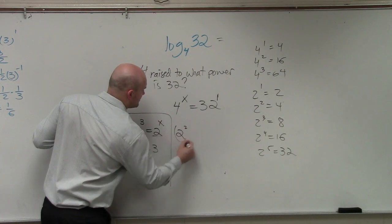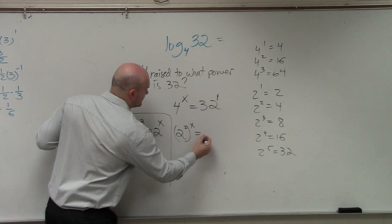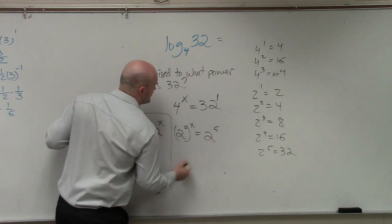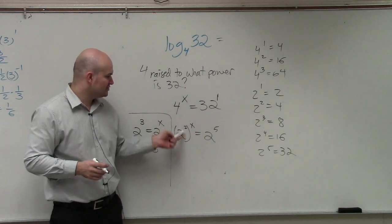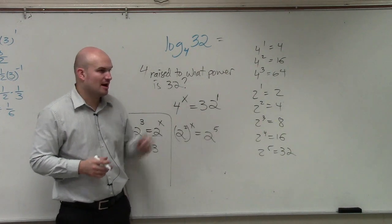So I can write this as 2 squared to the x is equal to 2 to the fifth power. Do you guys agree with me now? Do you guys agree with me that 2 squared is 4 and 2 to the fifth power is 32?